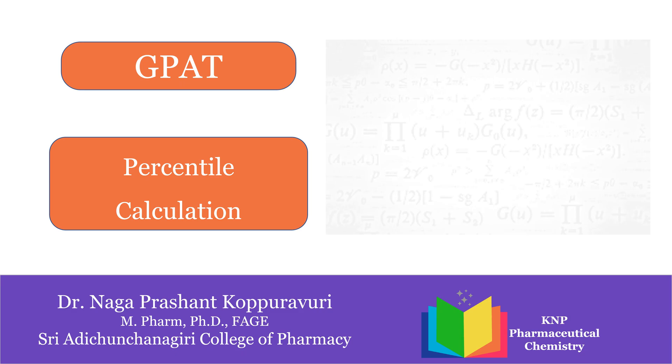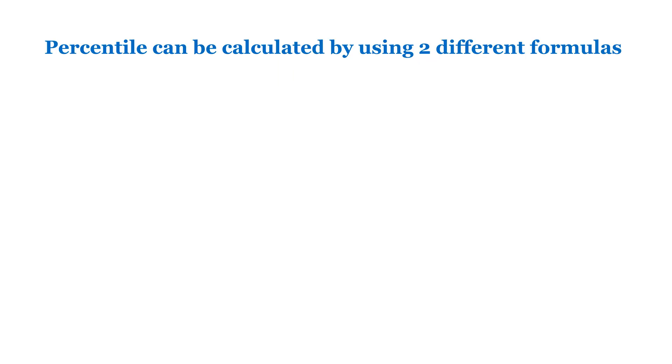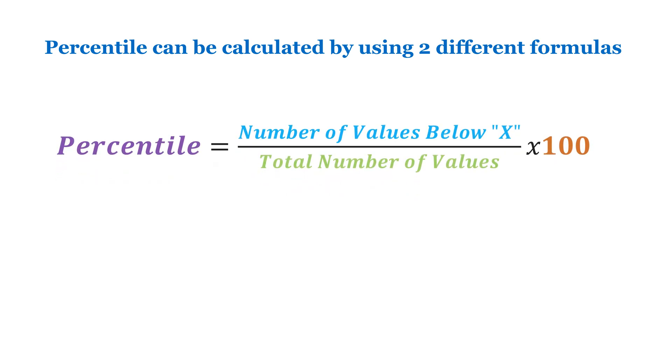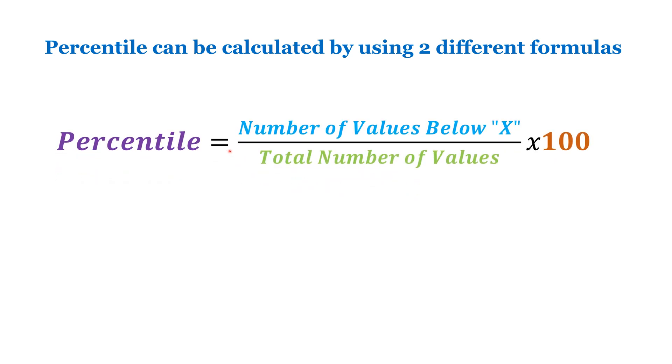Dear GPAT aspirants, please be aware that percentile can be calculated using two different types of formulas. Whatever formula we are using, the result is the same. The first formula is: percentile equals number of values below X divided by total number of values multiplied by 100.